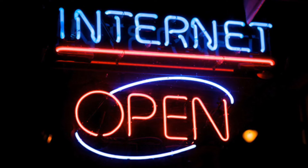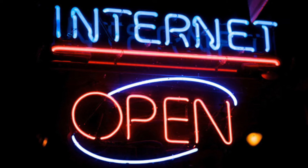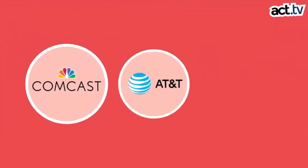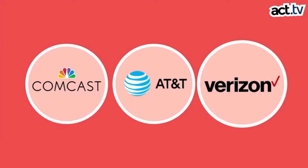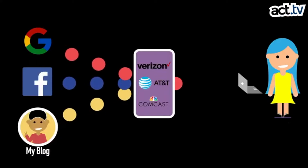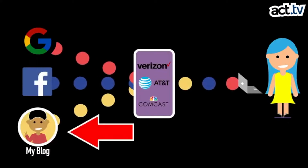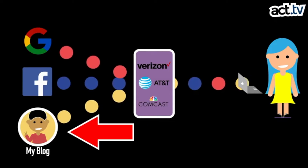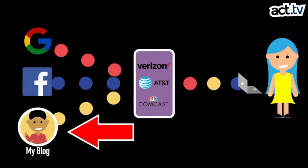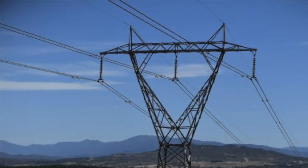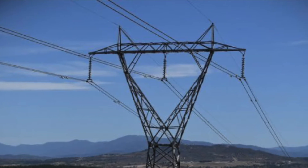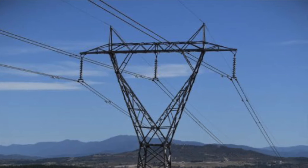Network neutrality, also sometimes referred to as open internet, is the principle that internet service providers such as AT&T, Verizon, and Comcast should treat all data over the internet equally and should not limit access or charge differently by user, content, website, application, or device. A useful analogy is the electric grid, which is implicitly built on neutrality theory.